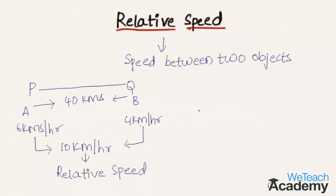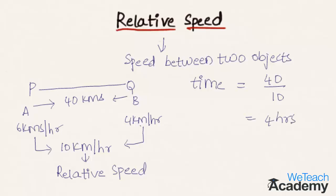The total distance of 40 kilometers will be covered by A and B when they meet each other. The time taken by A and B to meet is total distance, 40 kilometers, divided by the relative speed of 10 kilometers per hour, which gives 4 hours.